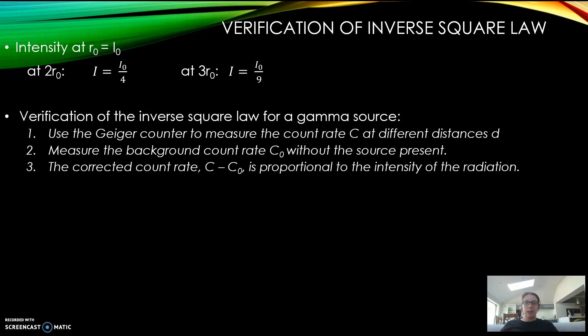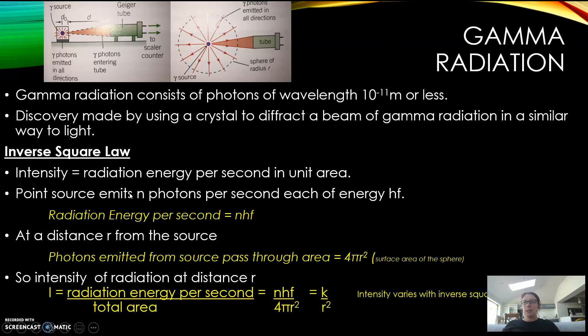Then the count rate with the source is called C. We calculate something called the corrected count rate, which is just the count rate that's definitely from the source: C minus C₀. That gives you the corrected count rate - you've taken off the background radiation so you know what you're getting is just from your source. We say that's proportional to the intensity of the radiation. So C minus C₀, that's the corrected count rate, we've got our k constant, and then we've got distance squared, but it says d plus d₀.